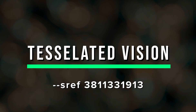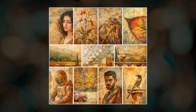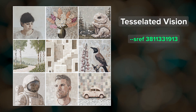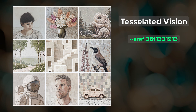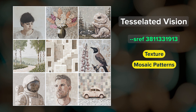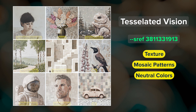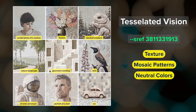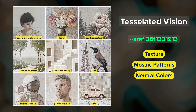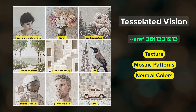Tessellated Vision — if you liked the mosaic tapestry style in the last video, you might like this one. This style creates images with interesting textures and mosaic patterns. The color palette for this one is neutral and muted, and there's almost a slight 3D effect on some of the images, like the flowers and the stardust creature, that remind me of textured acrylic paintings.